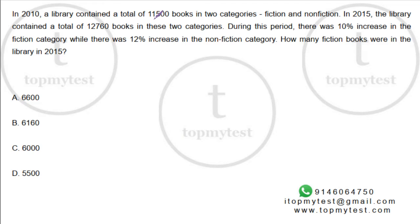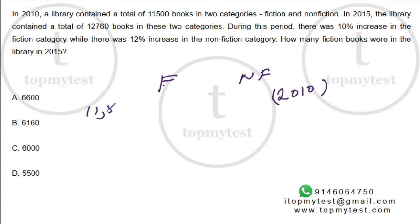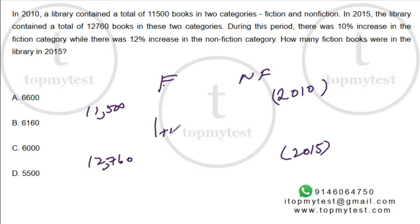In 2010 a library contained 11,500 books — fiction and non-fiction. In 2015 the library contained 12,760. During the period there was a 10% increase in the fiction category and 12% in the non-fiction category. So fiction increased by 10%, non-fiction increased by 12%. How many fiction books were there in 2015? This is what you need to find.